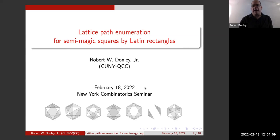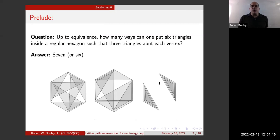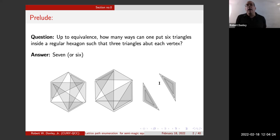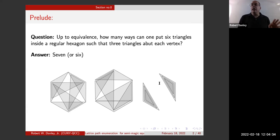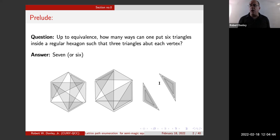Let's take a closer look at some of these. If I was to pitch this to an undergrad as a problem, I would ask: how many ways can you put six triangles into a regular hexagon so that you have three triangles touching each vertex? The answer will be seven, and the weasel word here is equivalence, so we'll also see it's probably better to say six, depending on what you're trying to do.